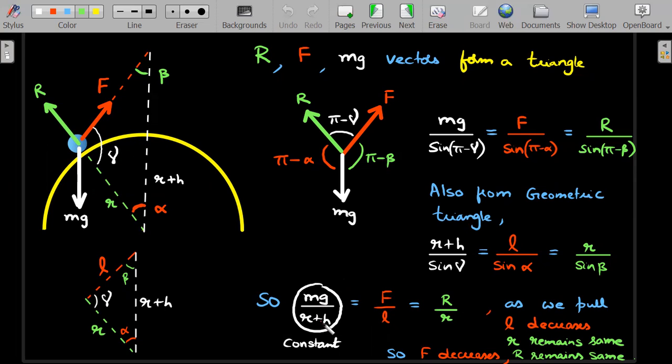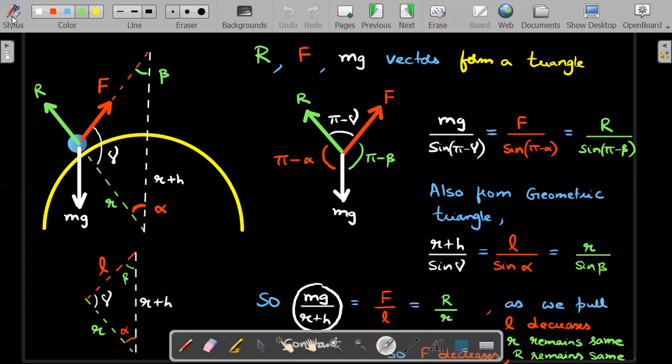So therefore, this ratio is a constant, which tells you that these two ratios are also constant, which means that as we pull the small L decreases, you could see this ball goes closer to the top small L decreases to keep this ratio constant capital F also should decrease. Not only that, this as we pull the small R remains the same, this length never changes, that's the radius, therefore capital R should remain the same.